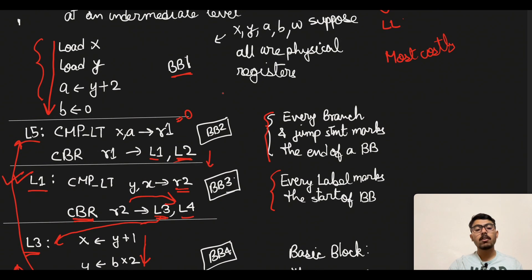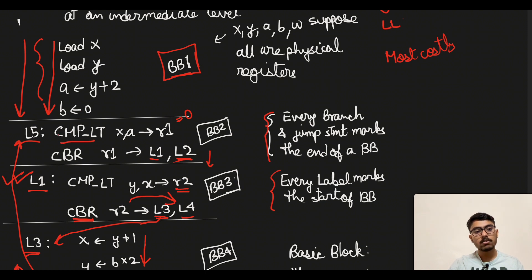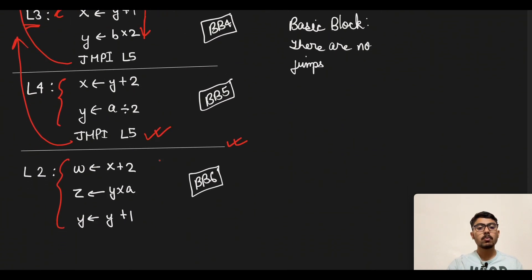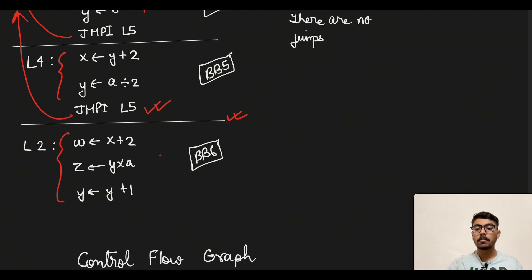Once we execute a jump statement we apply the basic block boundary rule to start the next basic block. For creating the very first basic block in intermediate code generation: until you see a jump statement or a label, you stay in the same basic block. After that, follow the rules I mentioned to keep creating and assigning new basic blocks to the code.